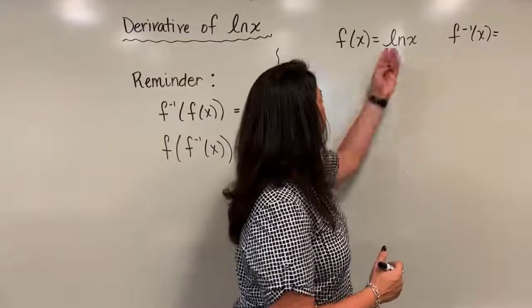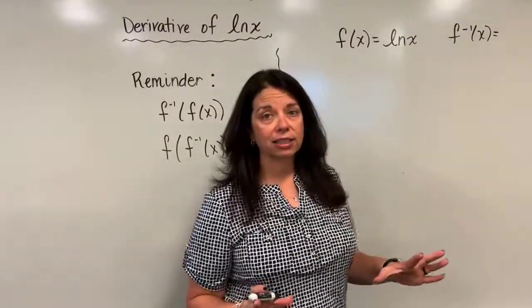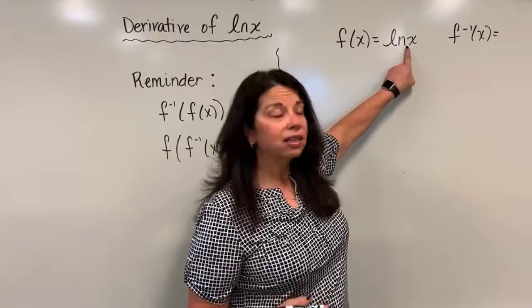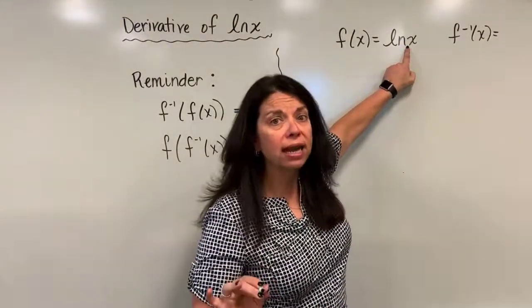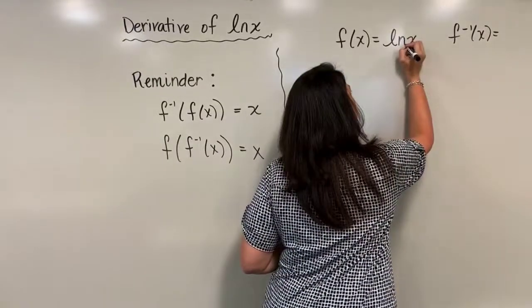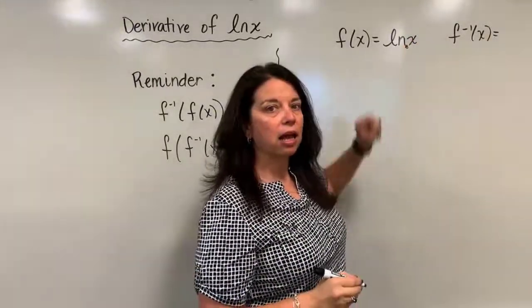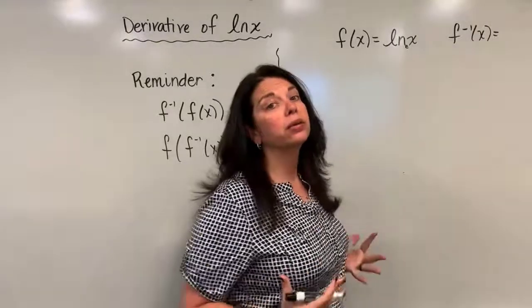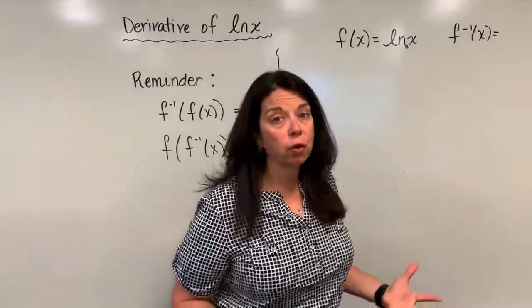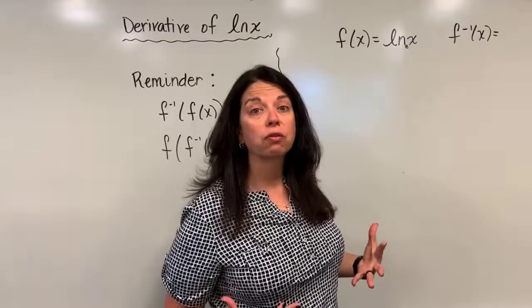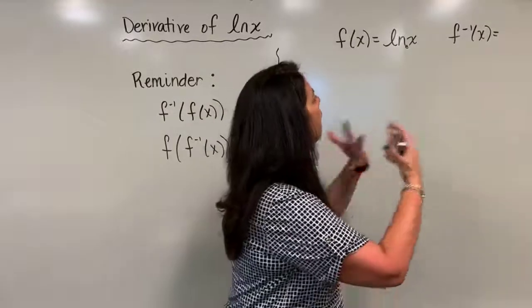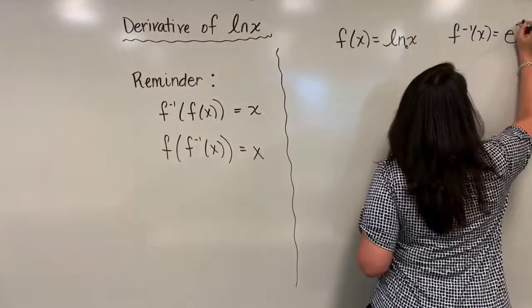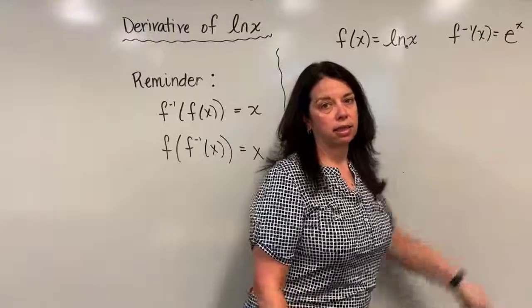Logarithms are highly connected to exponential functions. In this case, I have the natural logarithm, which has base e — we write ln instead, but there's a base e present. To find the inverse of natural log x, I'm going to rearrange it into exponential form. Written as an exponential, the inverse is simply e to the x.